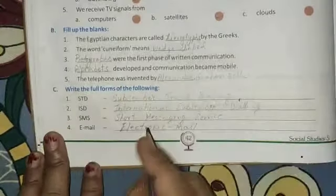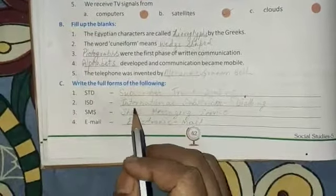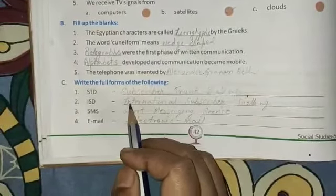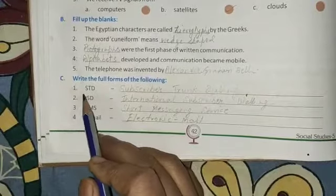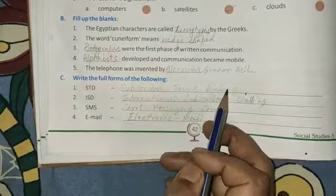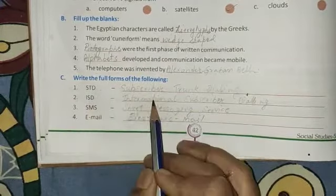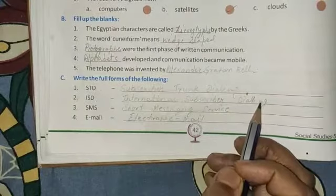Now next is write the full forms of the following. This also you have to write in the book itself. Number 1, STD, that is Subscriber Trunk Dialing. Number 2, ISD, that is International Subscriber Dialing.